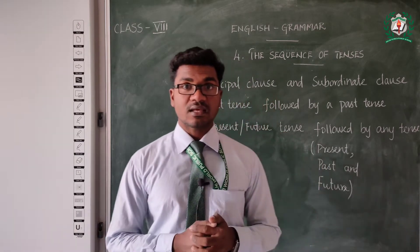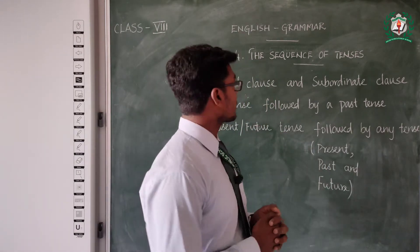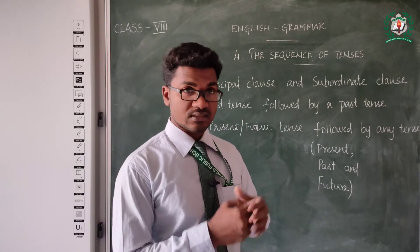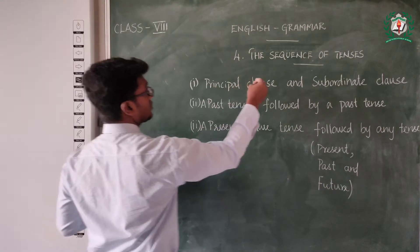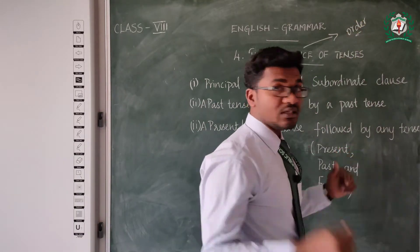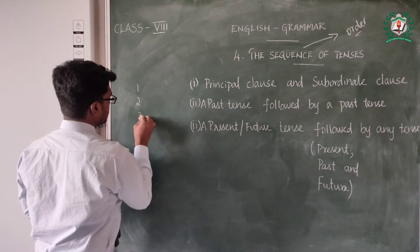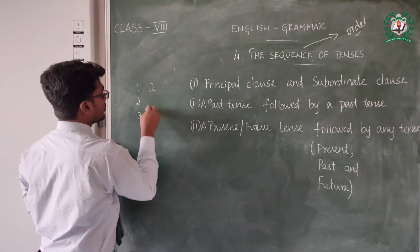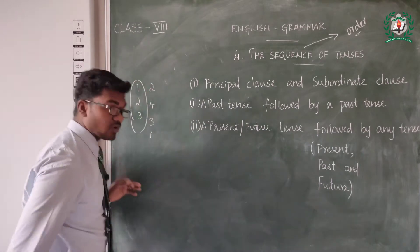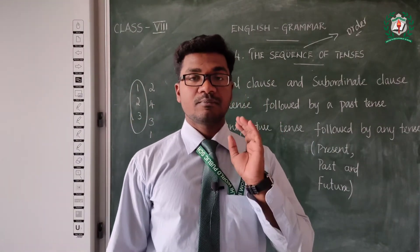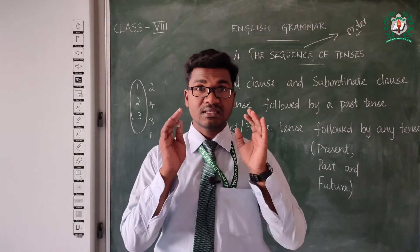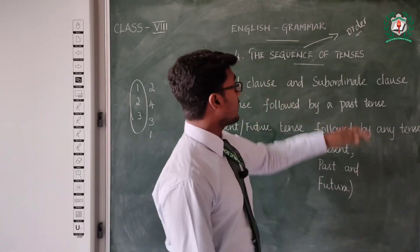Hello students, welcome to English classes. Today we are starting grammar — the chapter name is the Sequence of Tenses. What is meant by sequence? Sequence means order. When you see numerals, it comes 1, 2, 3 — this is the order. We cannot change the order, so this we call as sequence. Even in grammar, the tenses will be sequenced — they will be in order.